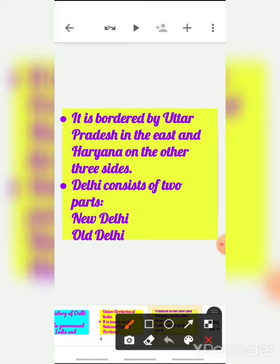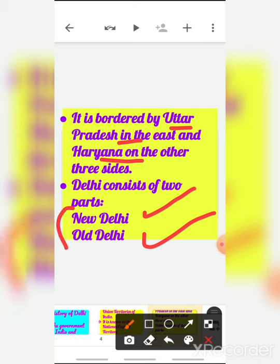Delhi is bordered by Uttar Pradesh in the east and Haryana on the other three sides. So the neighboring states of Delhi are Uttar Pradesh and Haryana. Delhi consists of two parts: New Delhi and Old Delhi. There is history behind how Old Delhi became New Delhi, which we will discuss.